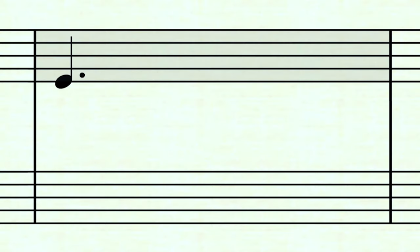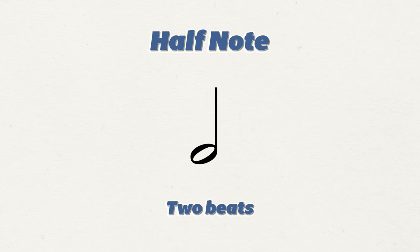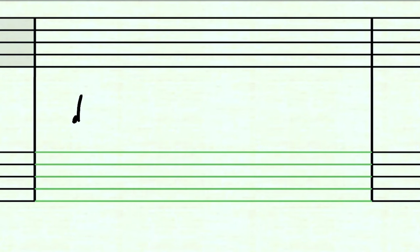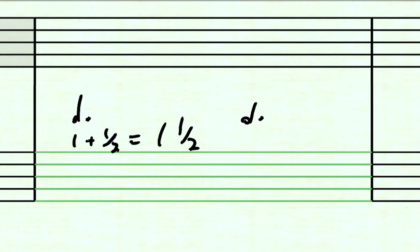Here we have a dotted quarter note. You saw a dotted half note earlier — the half note got two beats, and the dotted half note got three. The rule is that a dot adds half of the note's value back to itself. So a quarter note worth one beat, plus half of one, equals one and a half beats. That's also why a dotted half note gets three: two plus half of two equals three.